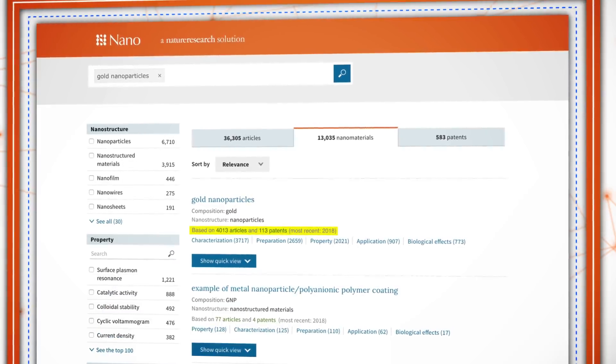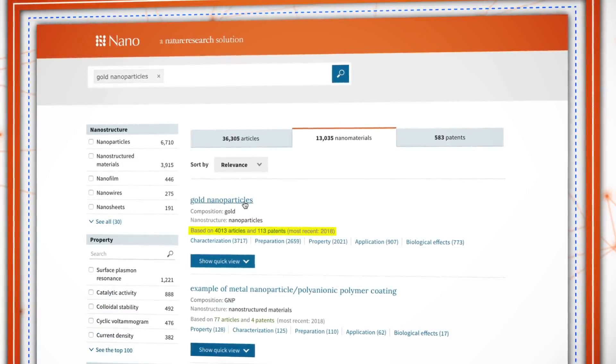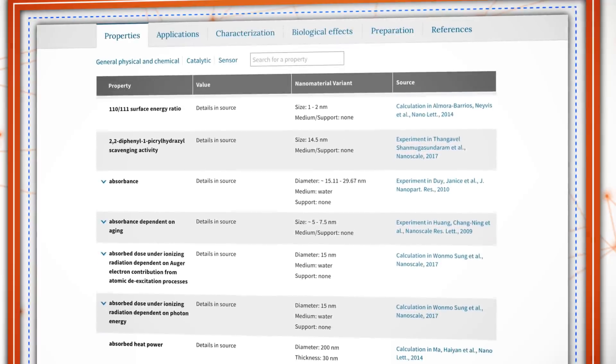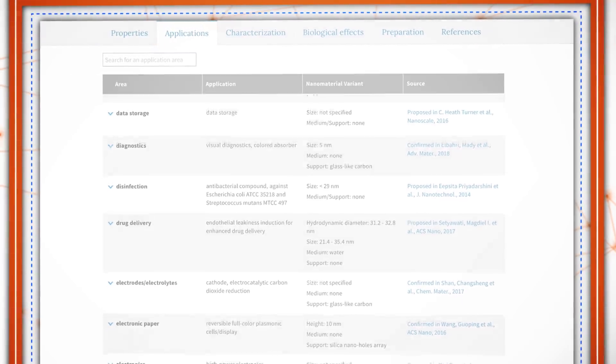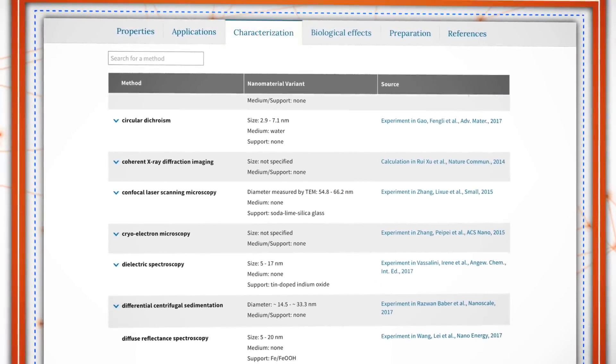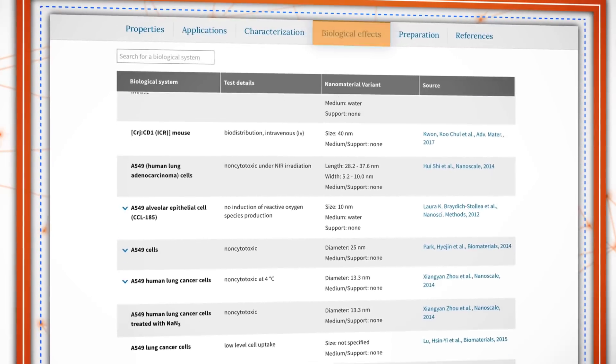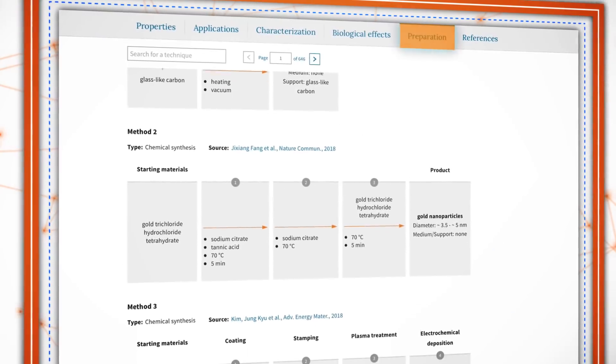For example, a summary of gold nanoparticles provides information including properties, applications, characterization, biological effects and preparation.